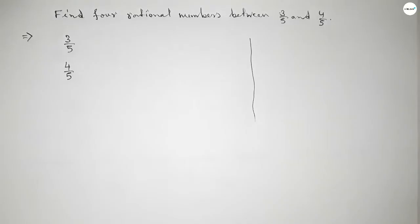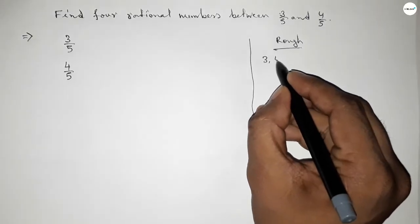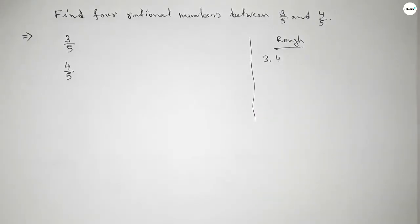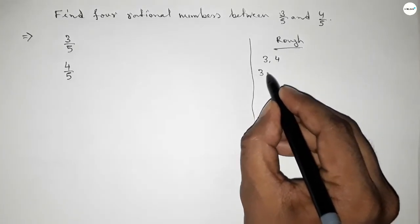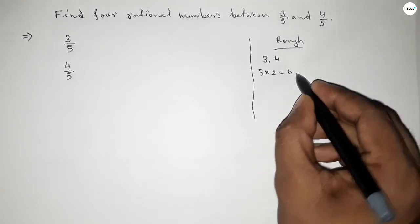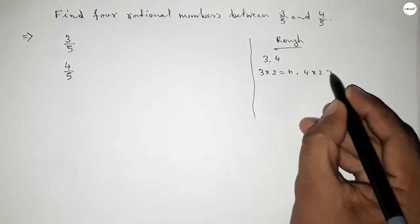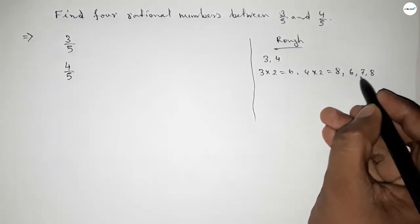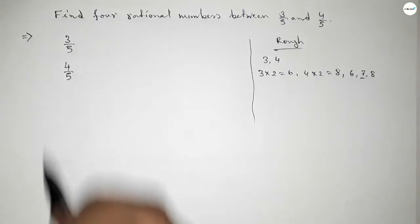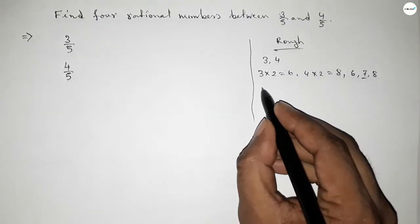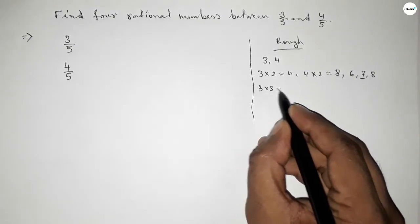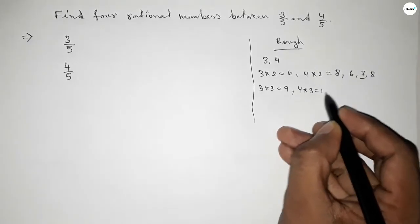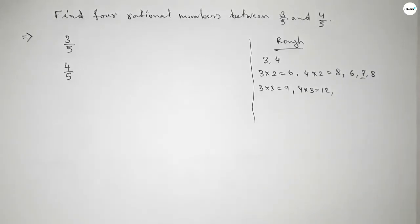The denominator of both numbers is the same, so we have to find four natural numbers between 3 and 4. If we multiply 3 by 2 and 4 by 2, we get 6 and 8. Between 6 and 8 we can get only one natural number, but we need four.